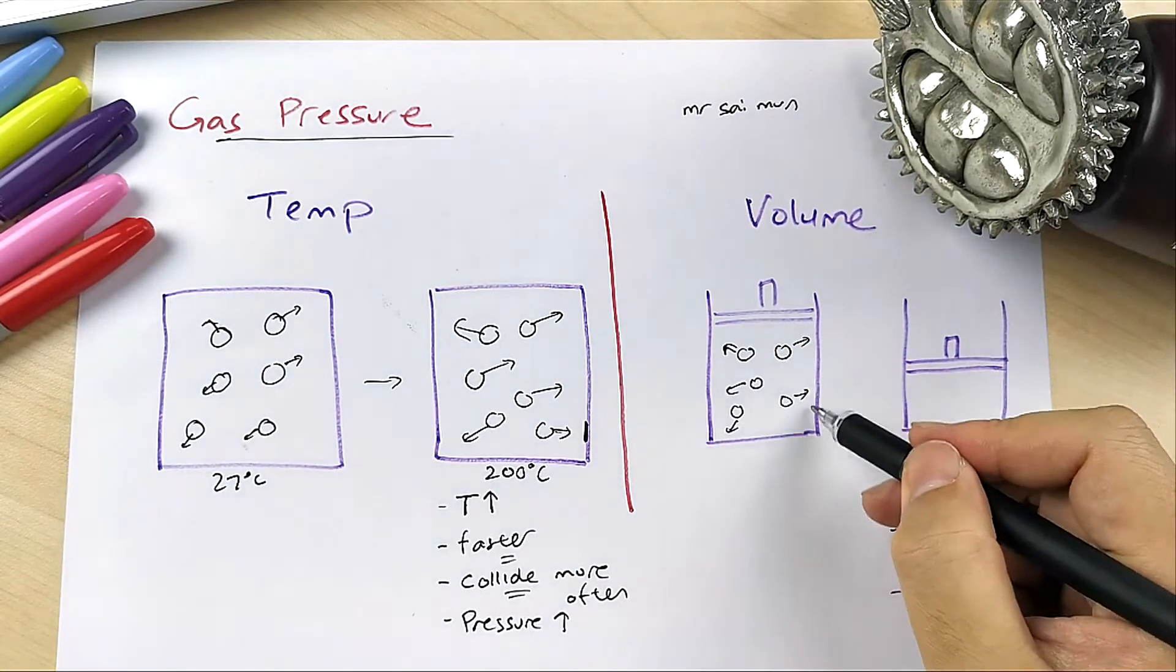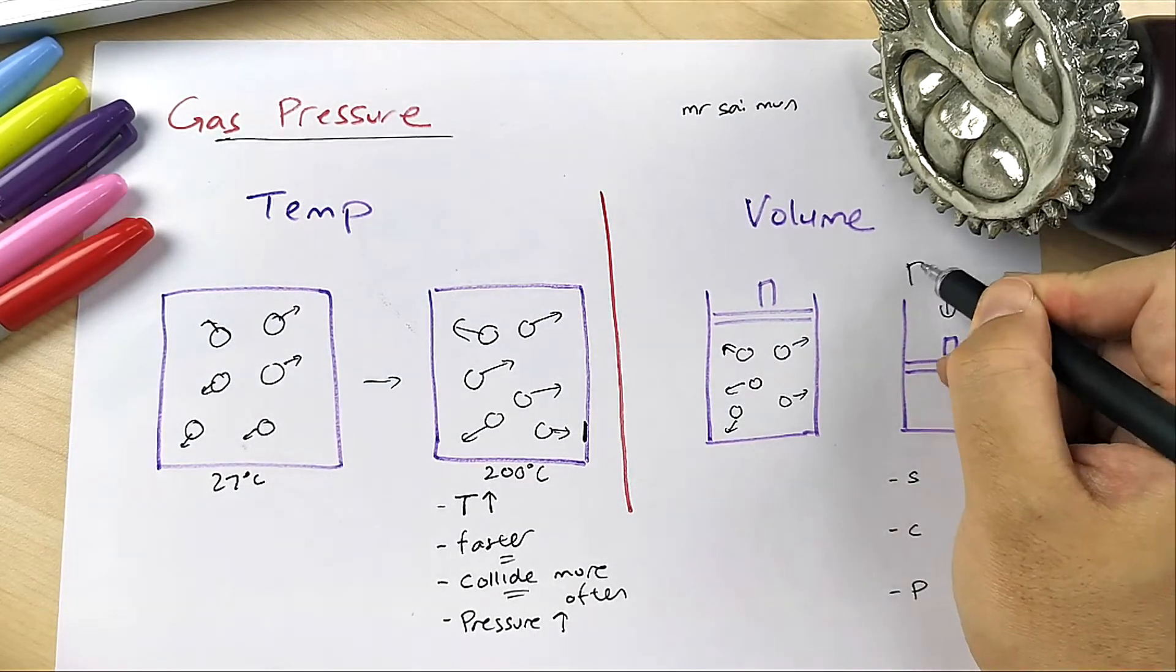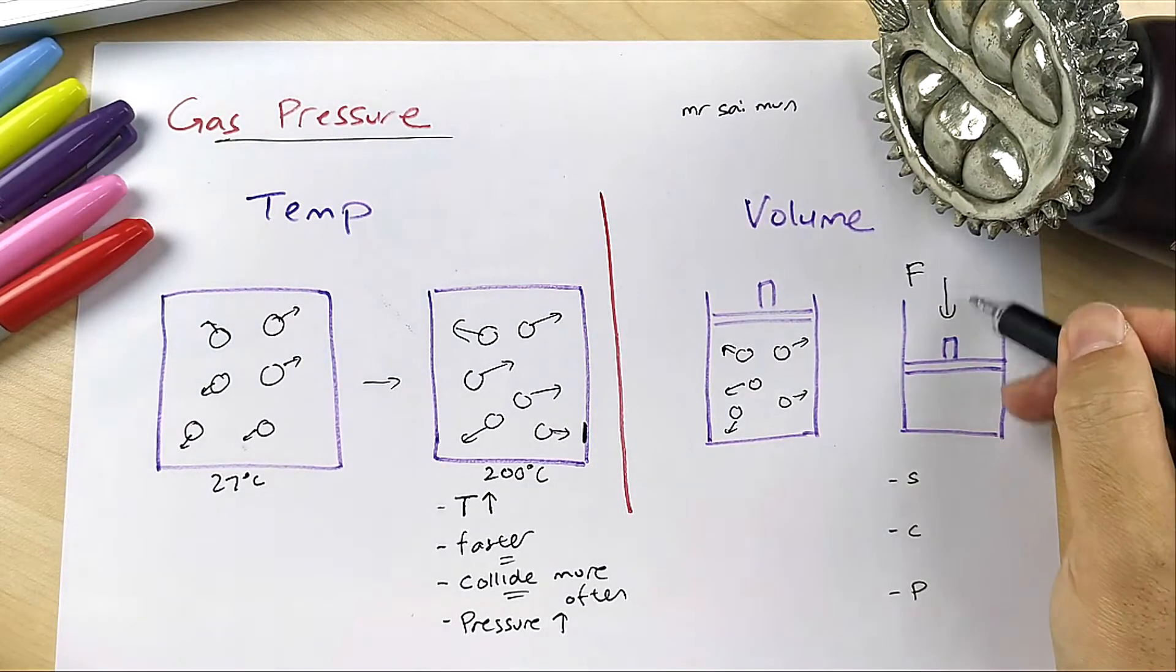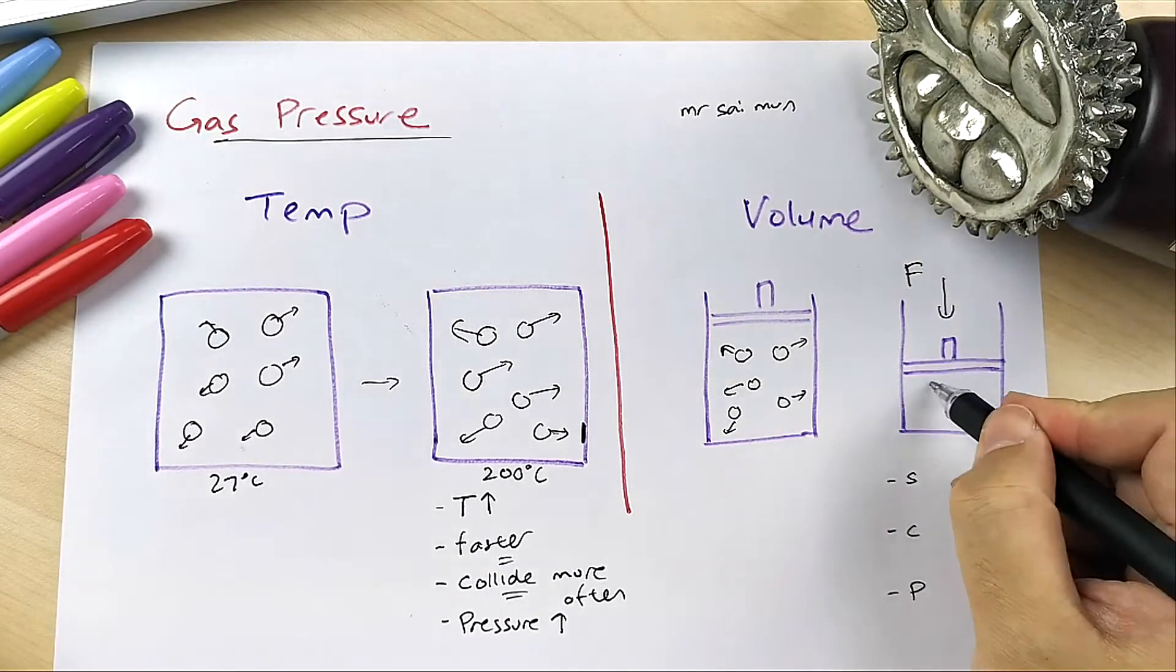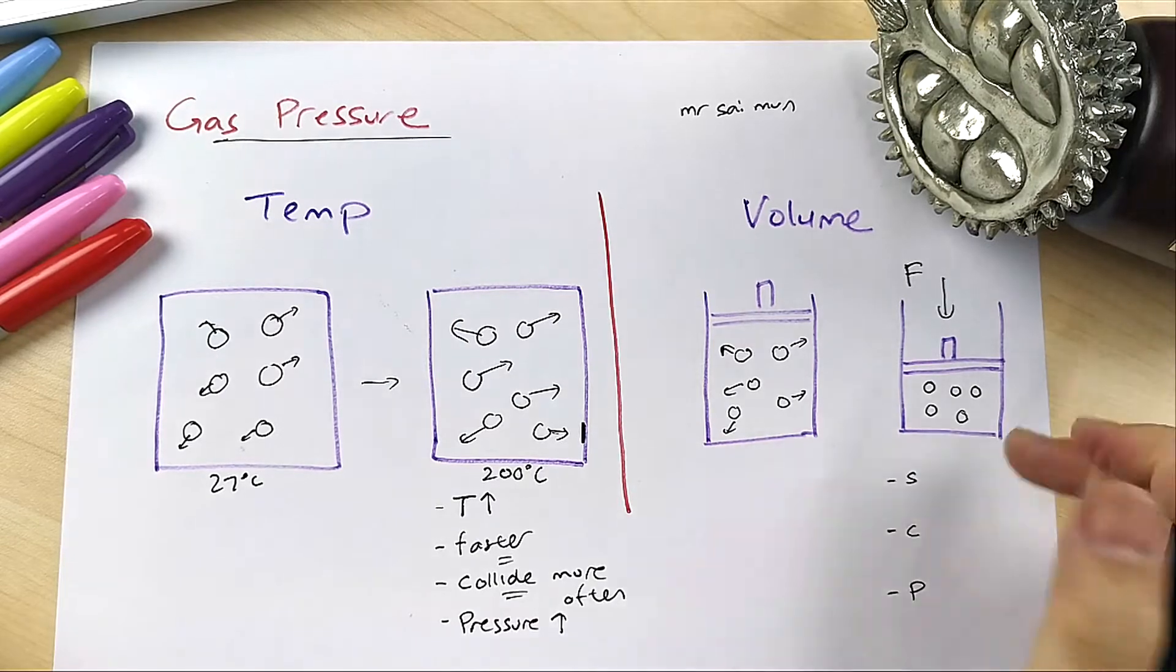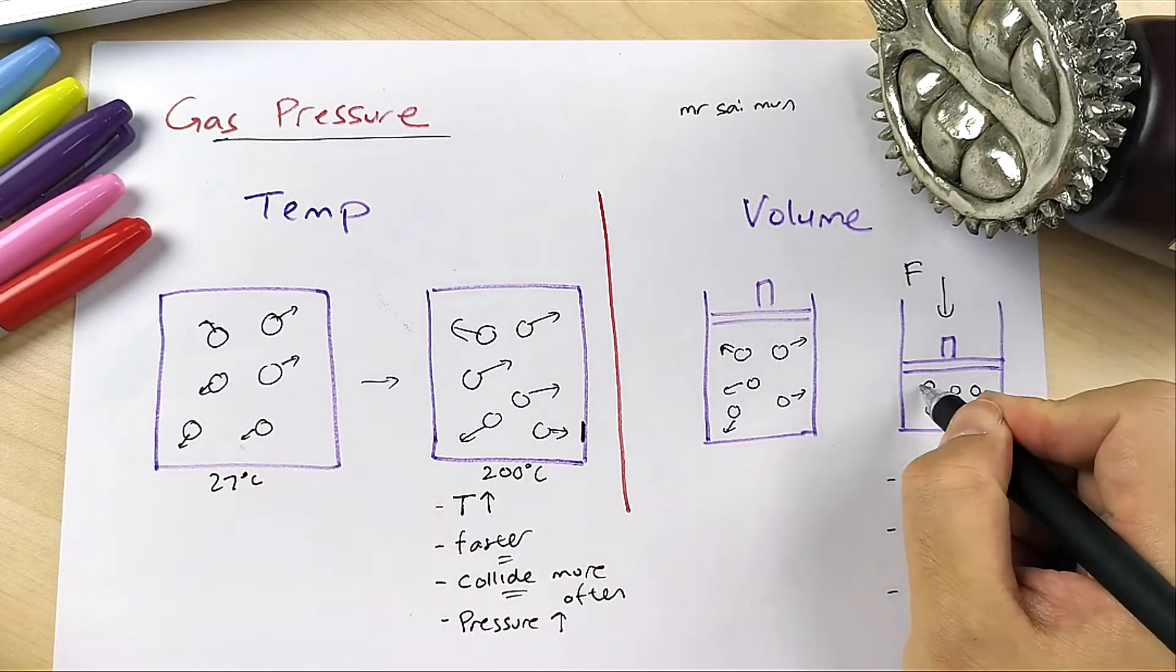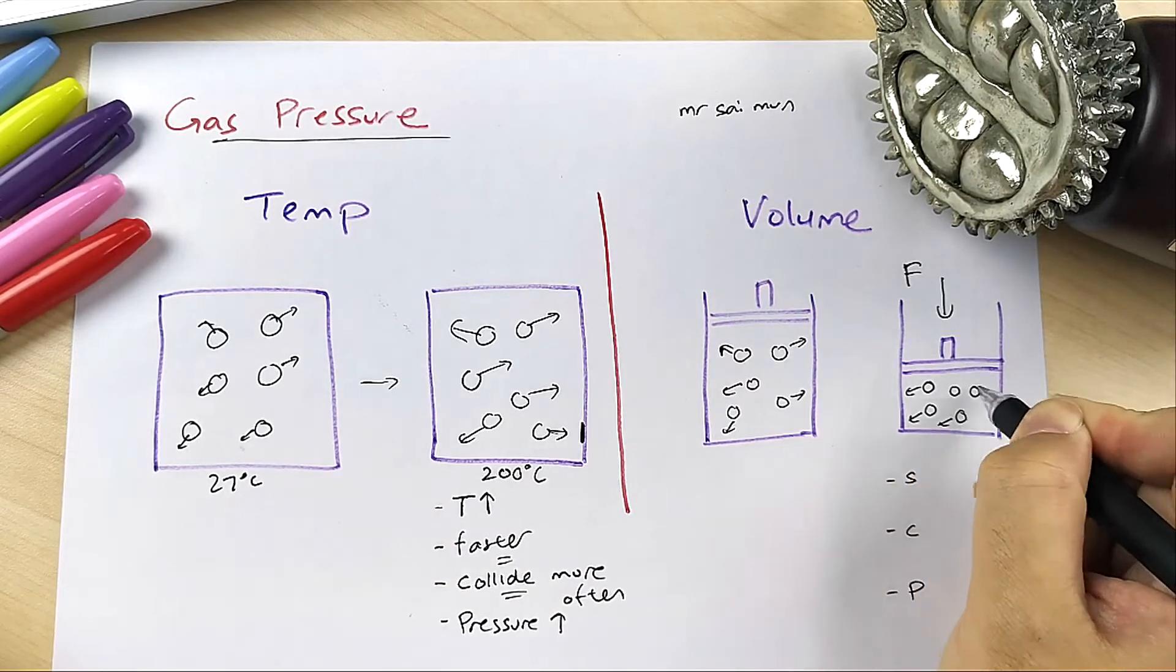If you compress it, put a force and push it down, these five particles now have a smaller space. When you have a smaller space, what happens? Logically, you can use a bit of logic - they will collide more often.